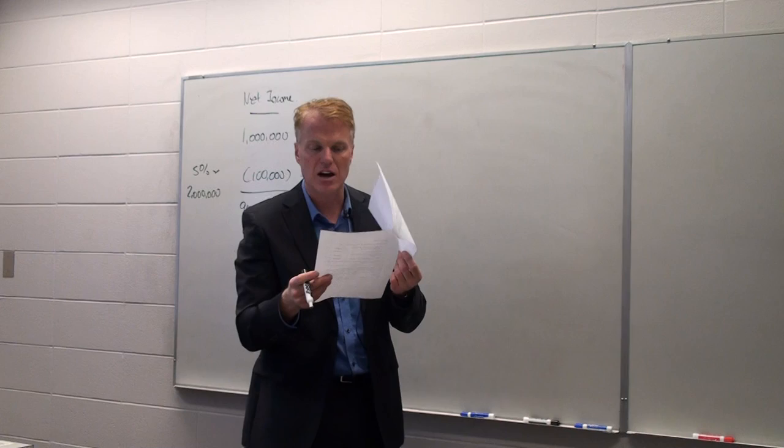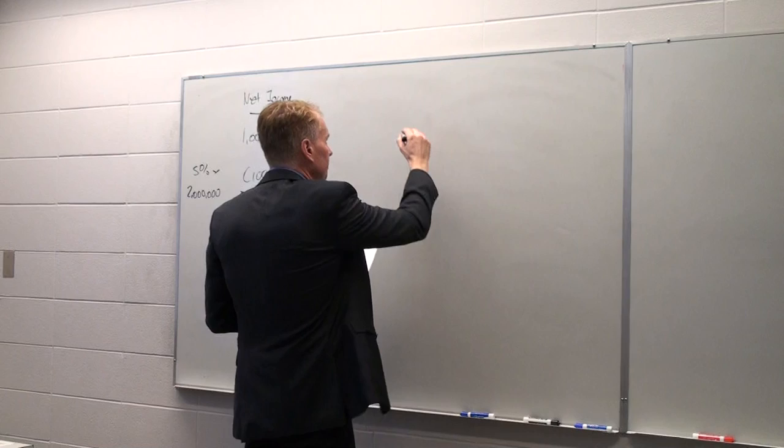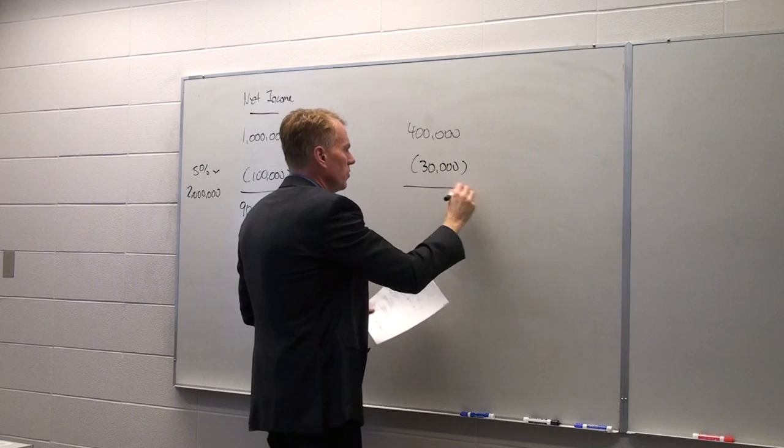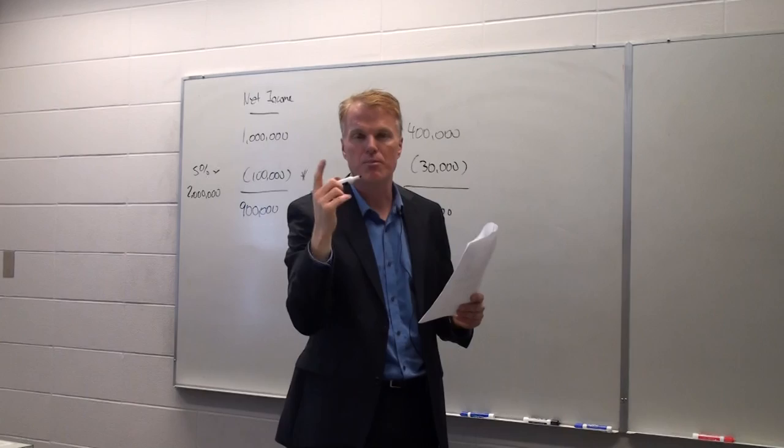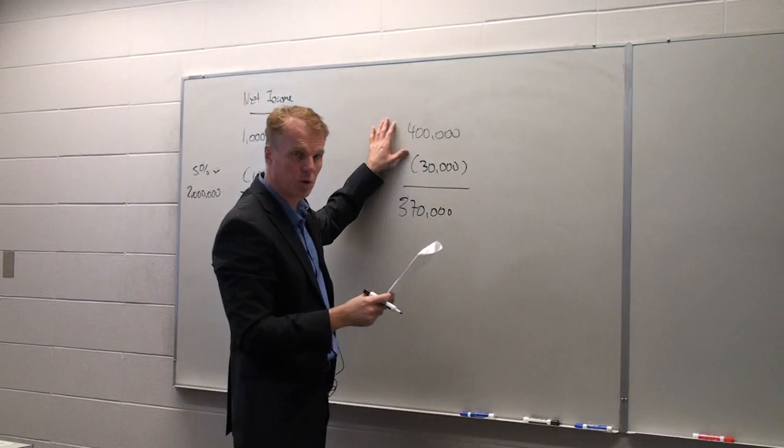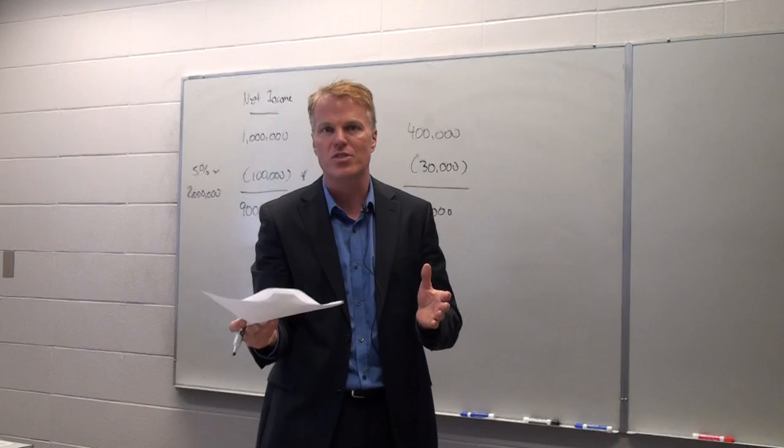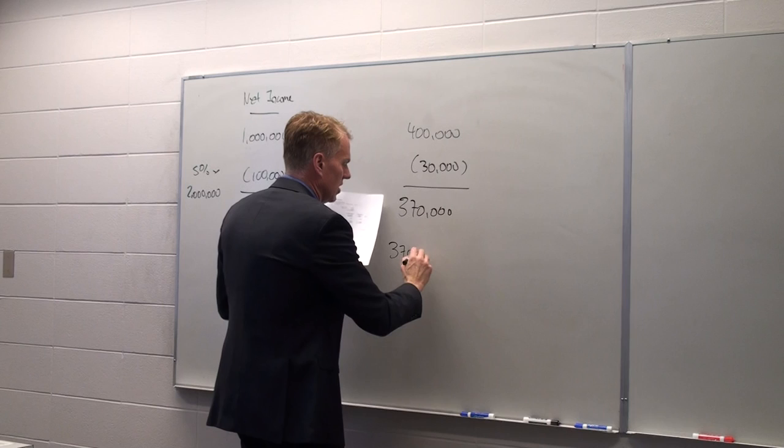We're also told that there's 400,000 issued and outstanding shares at the end of the year. So in doing this calculation, you have to recognize that for the full year, there was 370,000. For a portion of the year, there was 30,000 more. And that's how you get your total of 400,000. But as we know, we have to calculate the weighted average.